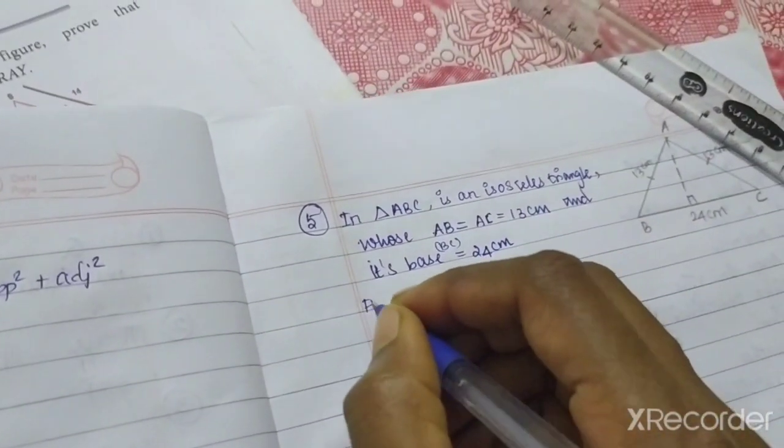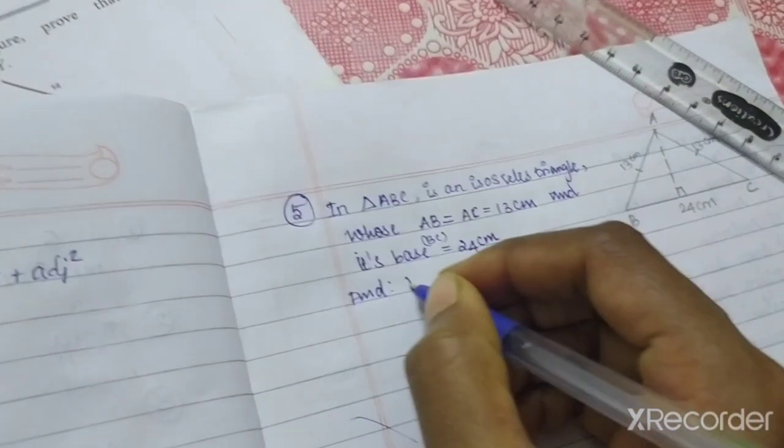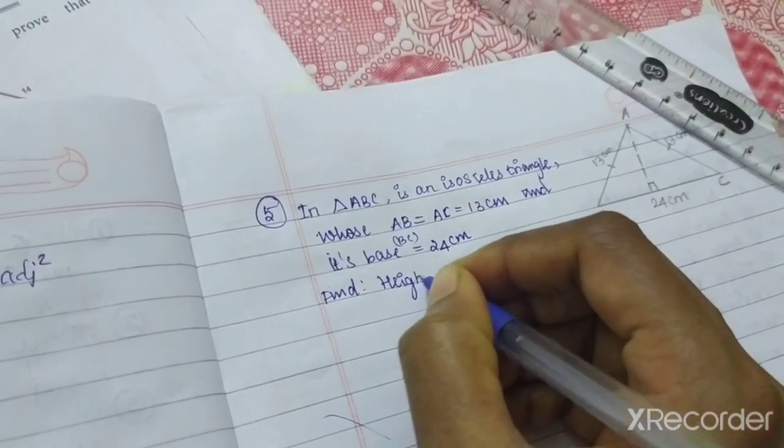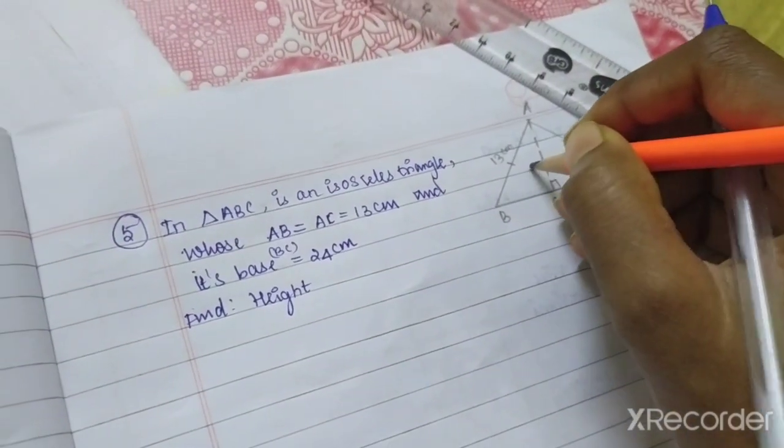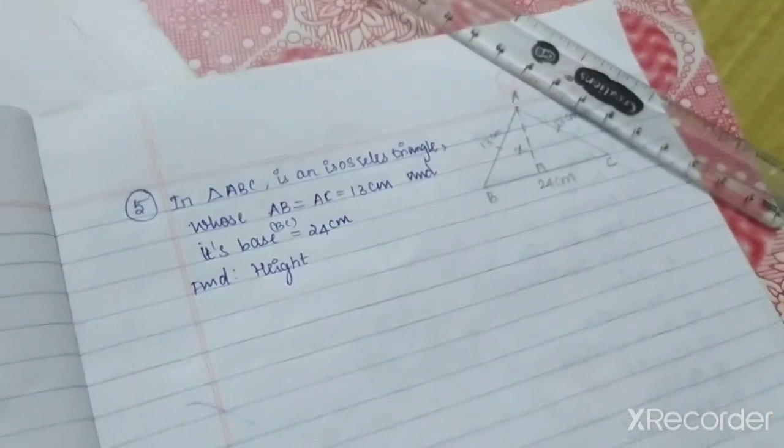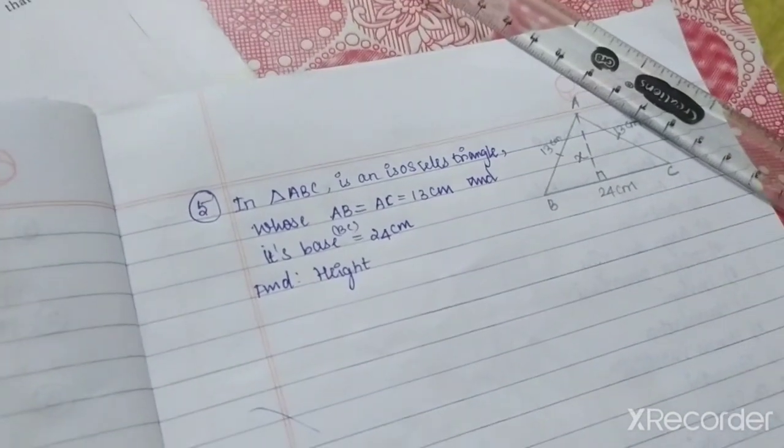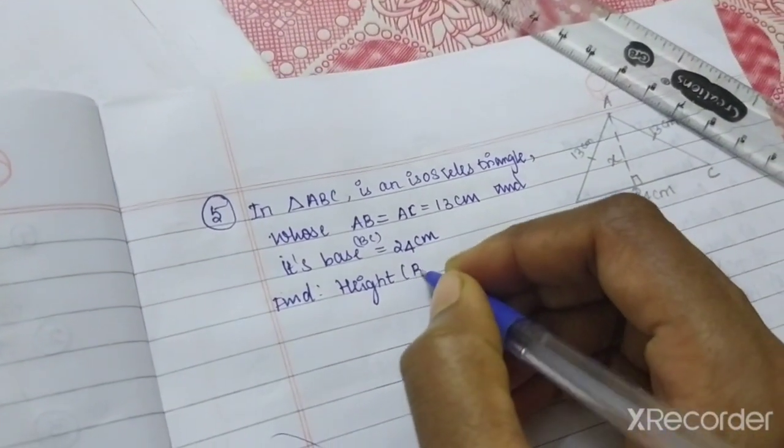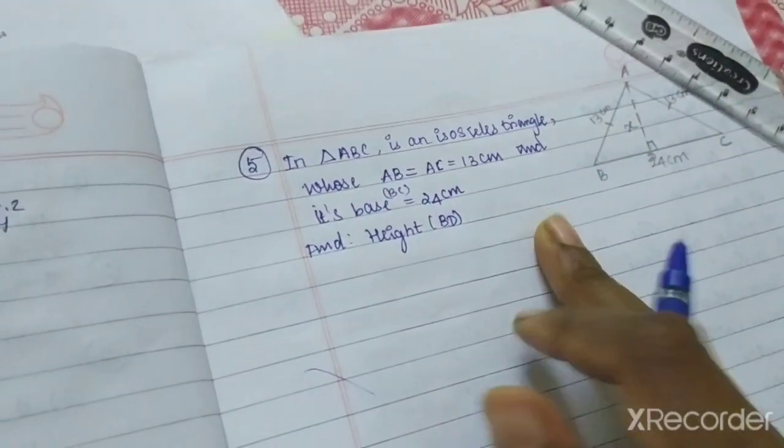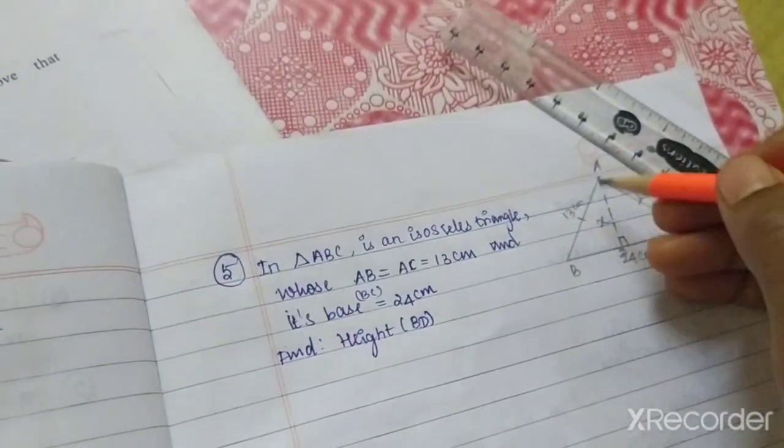Find height. Height means 90 degree perpendicular. This is your height, taking this as X. This is point D, so AD.